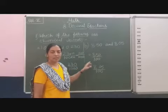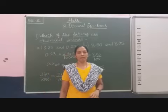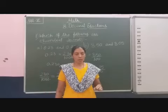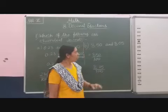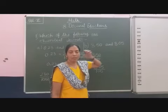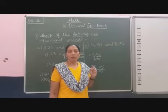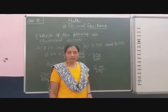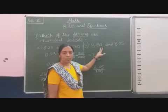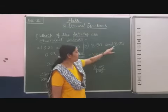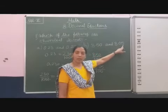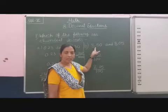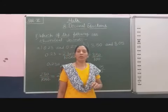We can say that these decimal numbers are not equal. Students, if you understand the main concept, no need to convert into the fraction. Easily you can also understand using the place value chart. After the decimal point, two numbers are given. The 5 is on the tenths place here, and the 5 is on the hundredths place there. So this is the greater number. That means we can say that these both decimal numbers are not equal.